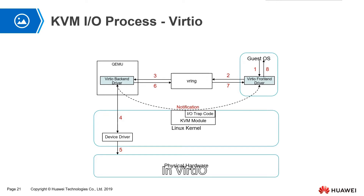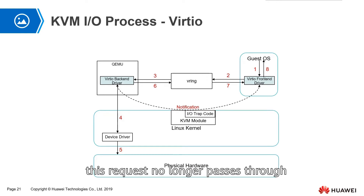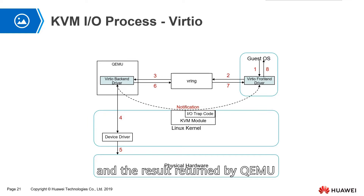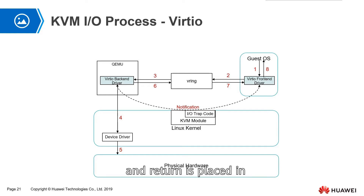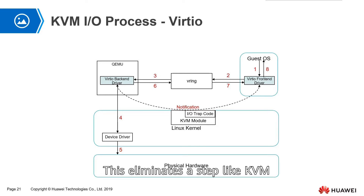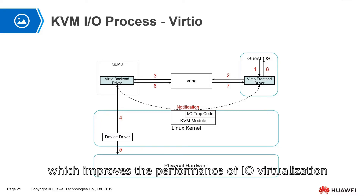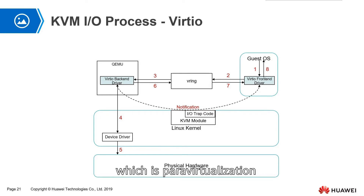This solution is VirtIO. In VirtIO, the request no longer passes through the KVM module, and the result returned by QEMU does not pass through KVM either. They can only send a notification via KVM. The result of the request and return is placed in a shared virtual space. This eliminates the KVM bottleneck step, which improves the performance of IO virtualization — this is para-virtualization.